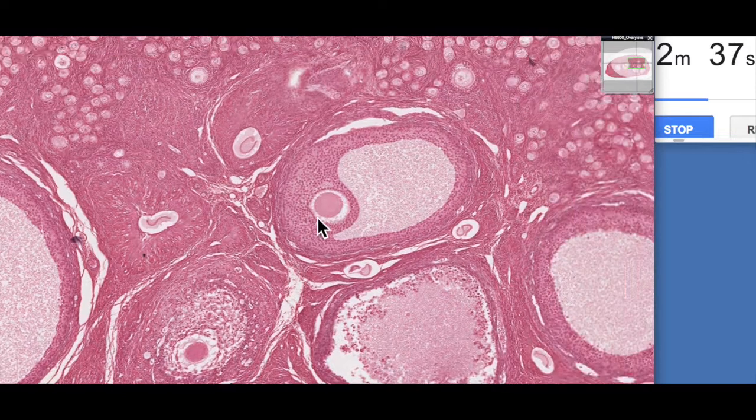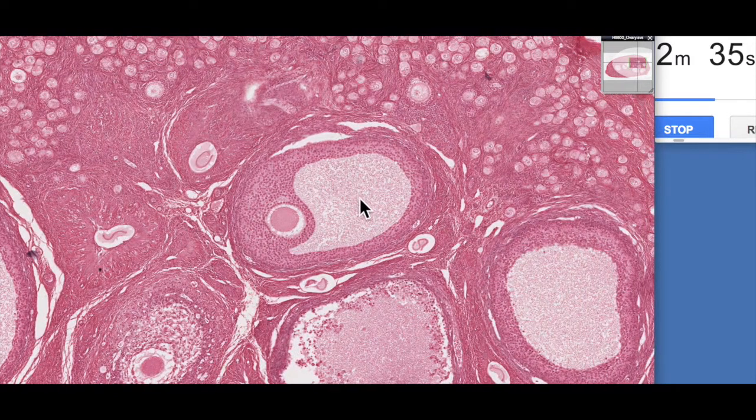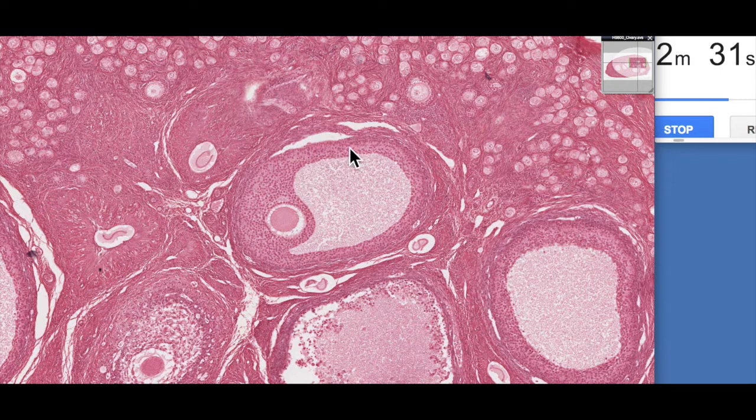This is the antrum, the fluid-filled space with the fluid being secreted by the granulosa cells. So this is the granulosa cells here, or the zona granulosa, which is the wall of the follicle. Here's our oocyte. It's surrounded by a thick glycoprotein coat called the zona pellucida, and then it's surrounded by several modified layers of granulosa cells called the corona radiata.